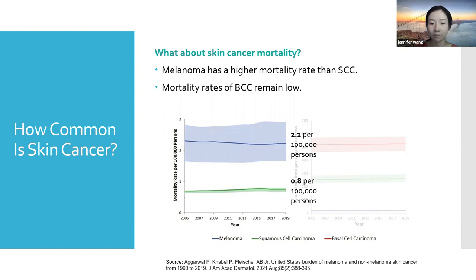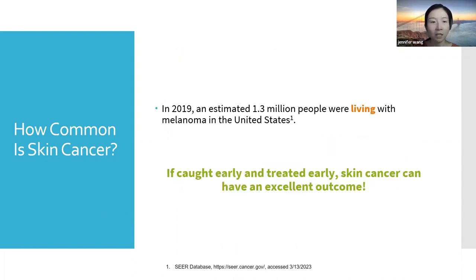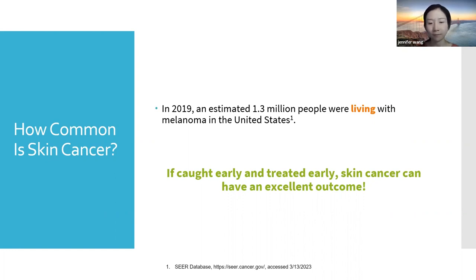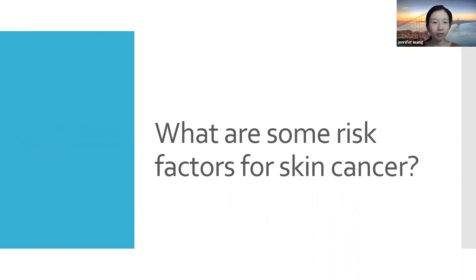In 2019 an estimated 1.3 million people were living with melanoma in the United States. This goes to show that if caught early and treated early, skin cancer can have an excellent outcome and can be very beatable. You can continue to live your life without having to worry about negative consequences. So, what are some risk factors for skin cancer?